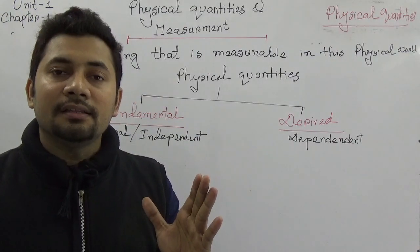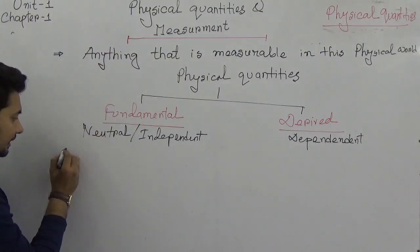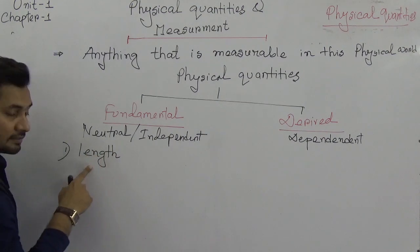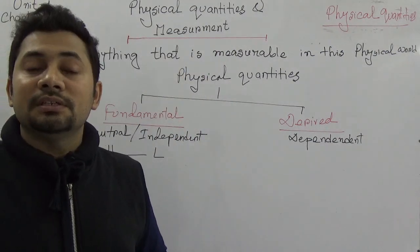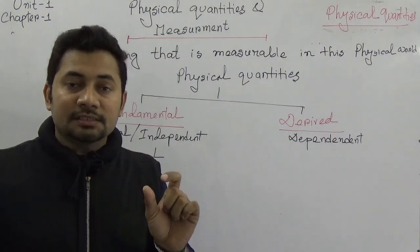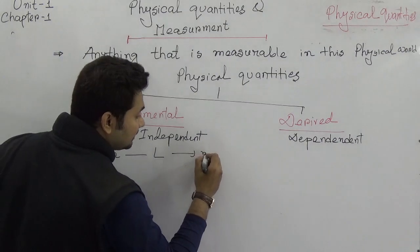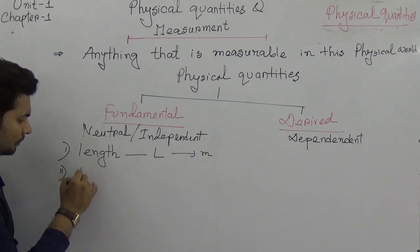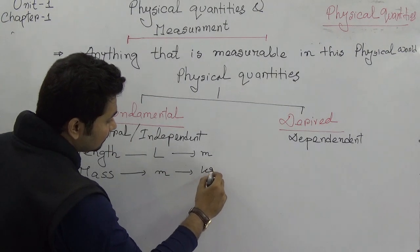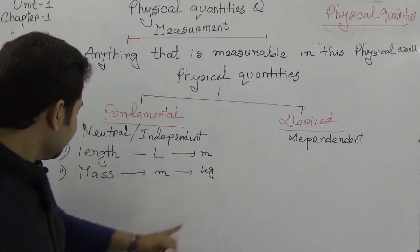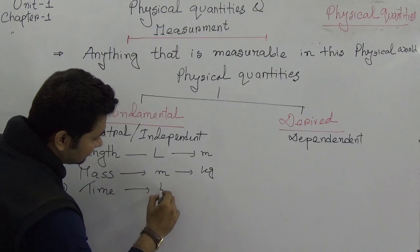Scientists have identified seven fundamental quantities. Number one is length, expressed by L, with the SI unit meter. Number two is mass, expressed by M, with the unit kilogram (kg). Number three is time, expressed by T, with the unit second.